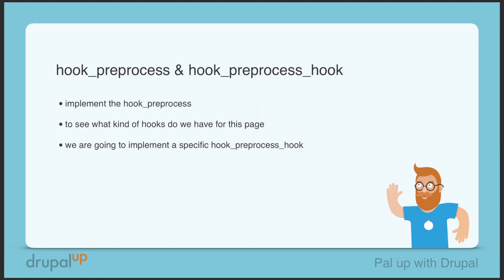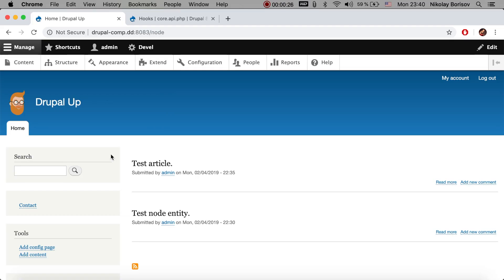In this video we're going to be taking a look at hook_preprocess and hook_preprocess_HOOK. We're going to be implementing the hook_preprocess and we're going to see what kind of hooks we have for that page, and then we're going to implement a specific hook_preprocess_HOOK. Here is our Drupal instance.